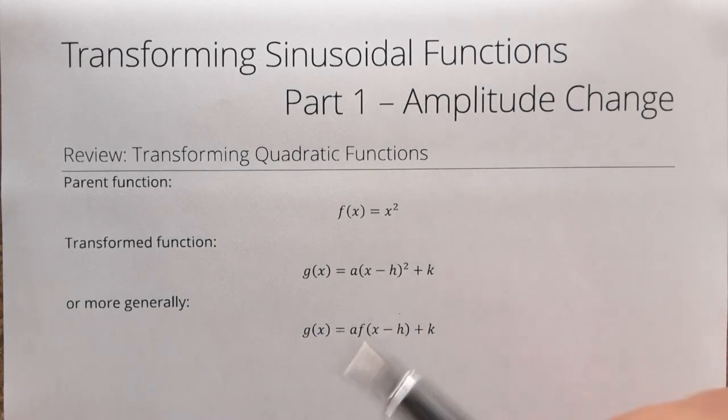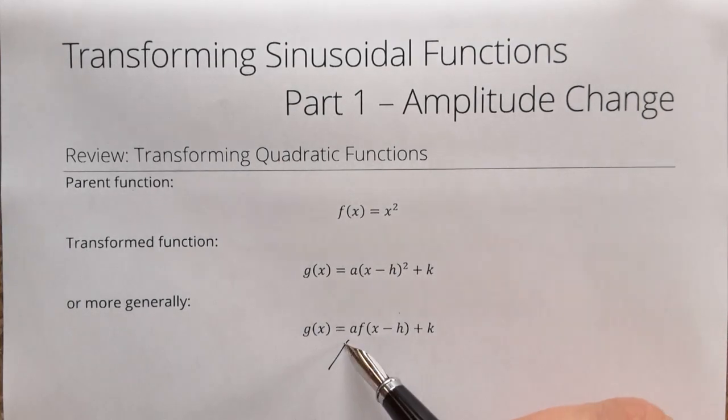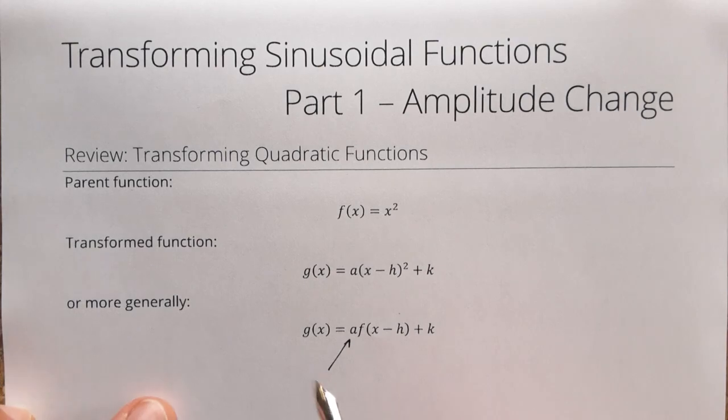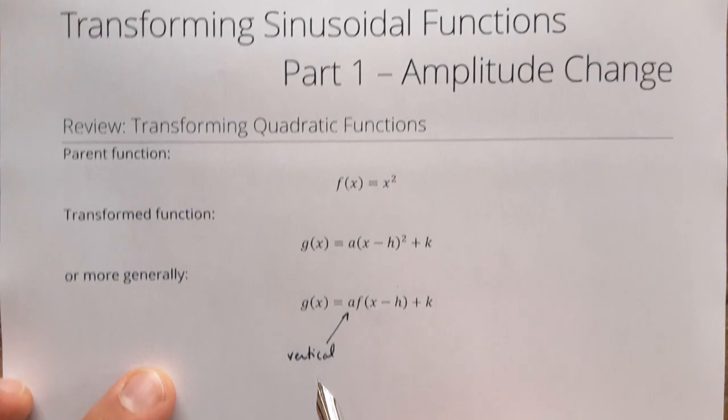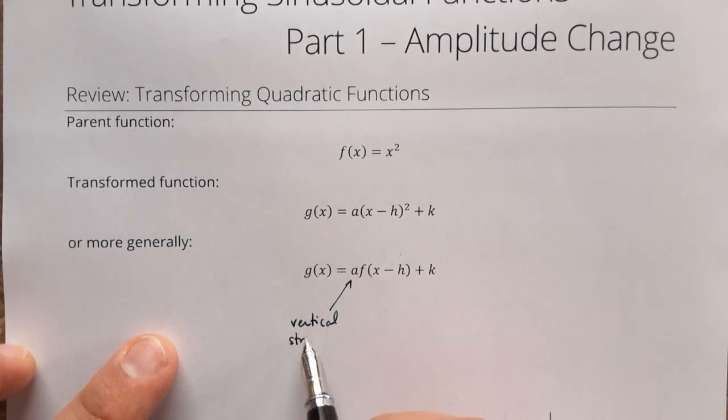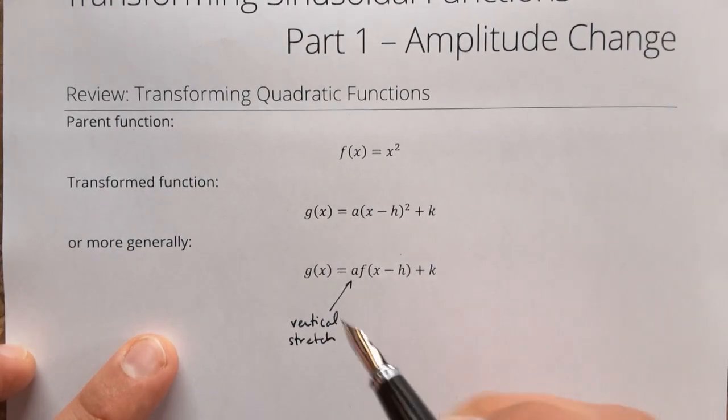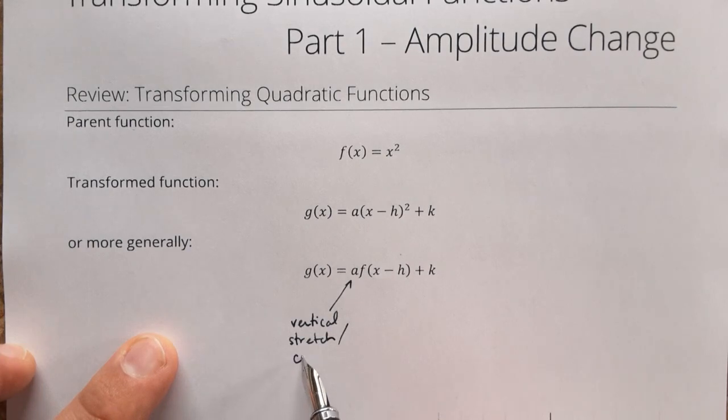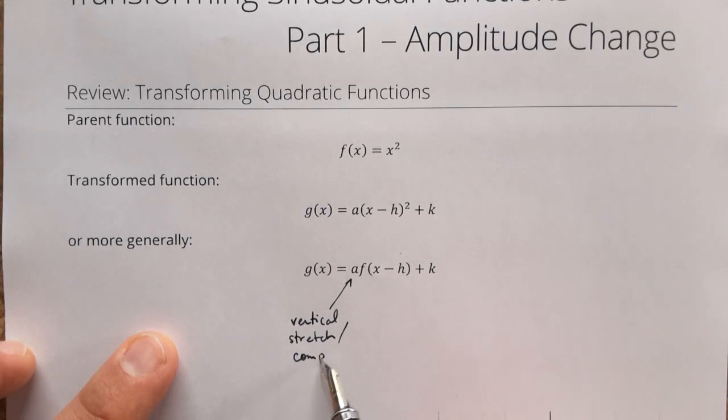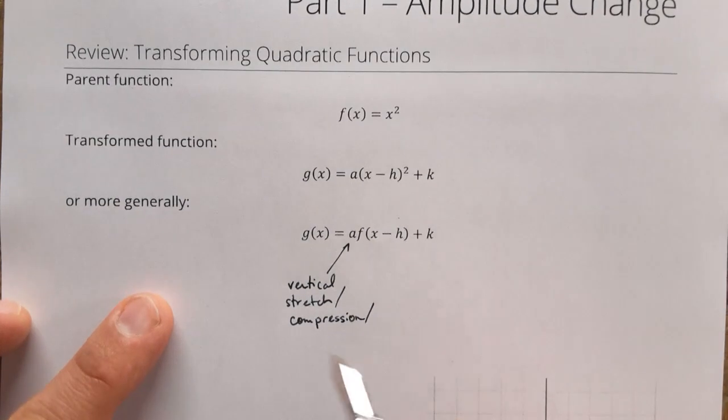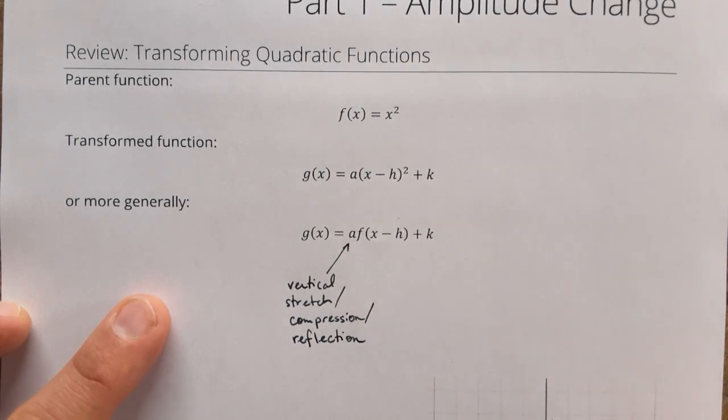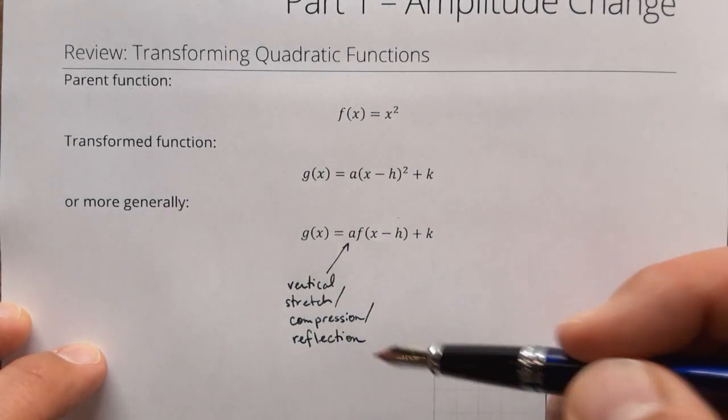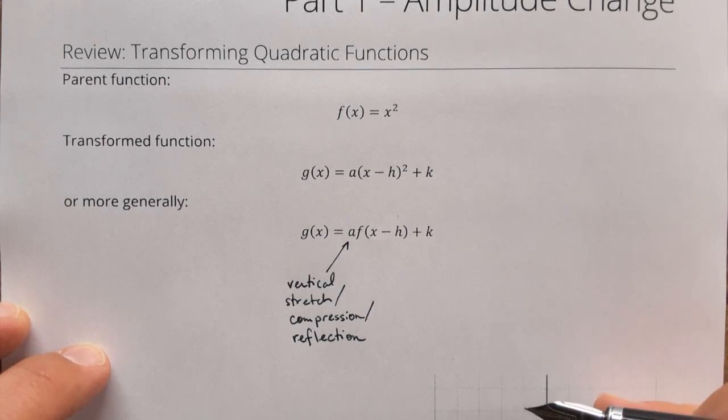So what these different letters do, these are called parameters. a, if you remember, is a vertical change, and it causes a vertical stretch if it's a large number, more than one, or it could be a compression if it's a small number between zero and one, and possibly a reflection if that's a negative number. All of those are vertical changes. The vertical reflection is a reflection in or across the x-axis.